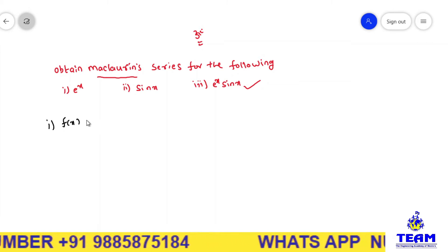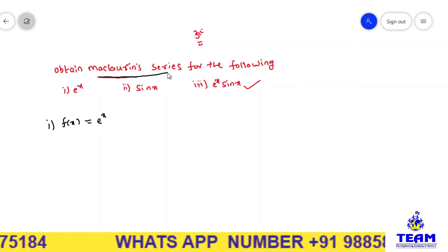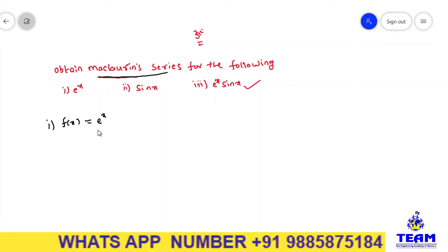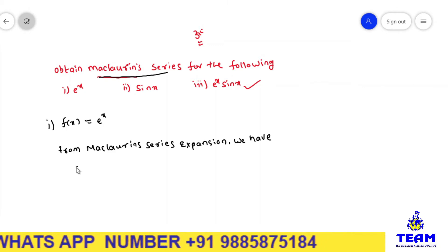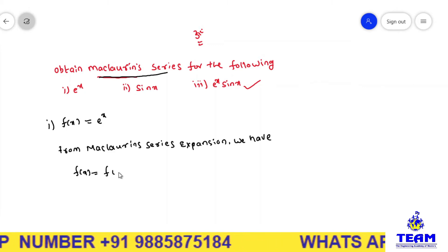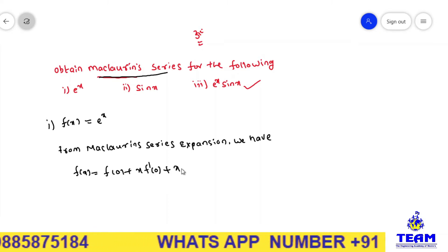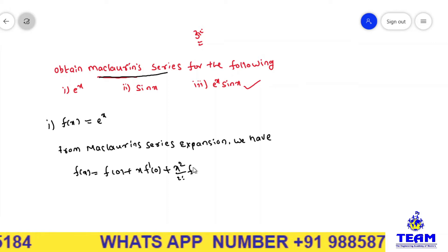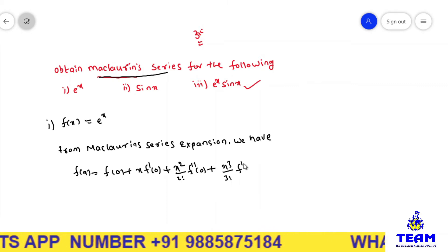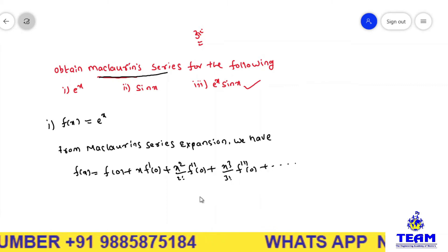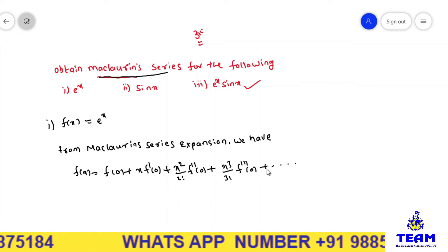The first problem: given that f(x) = e^x. Now by using the Maclaurin series we have to expand this function. From the Maclaurin series expansion we have f(x) = f(0) + x·f'(0) + x²/2! · f''(0) + x³/3! · f'''(0) + x⁴/4! · f''''(0) and so on.